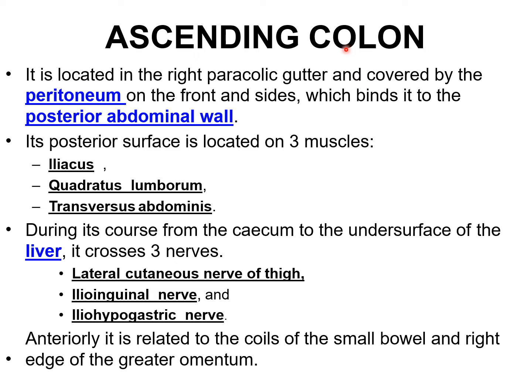The second part of the colon is the ascending colon. It is located in the right paracolic gutter, covered by peritoneum on the front and side, which binds it to the posterior abdominal wall. Its posterior surface is related to three muscles: iliacus, quadratus lumborum, and transverse abdominis.